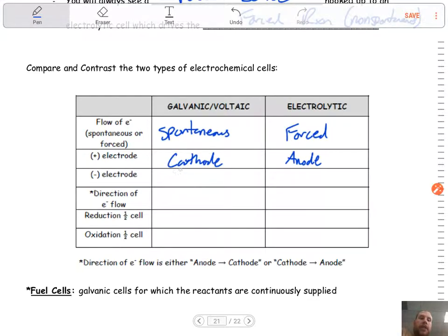Then, on the flip side, if the cathode is positive in a voltaic cell, that means the negative is going to be your anode. And it should be the opposite here in electrolytic that this would be the cathode.